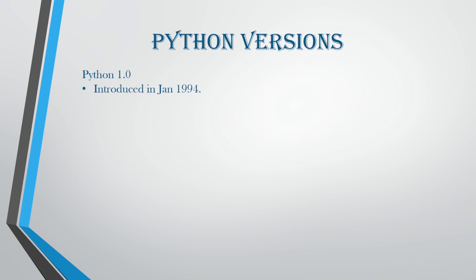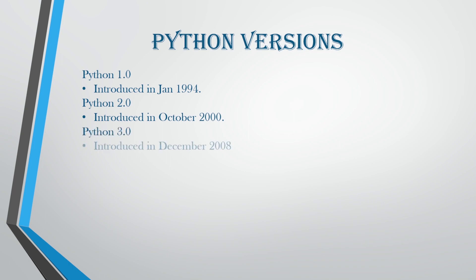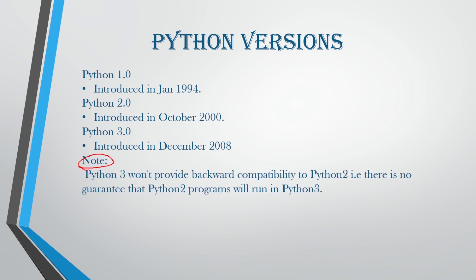The first version was introduced in January of 1994. The second version of Python was introduced in October 2000. The third version of Python was introduced in December 2008. Here is a small note: Python 3 won't provide backward compatibility to Python 2. That is, there is no guarantee that Python 2 programs are going to build and run on Python 3. This is one note that you have to keep in mind.